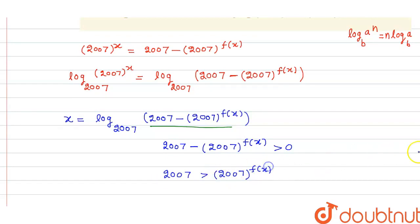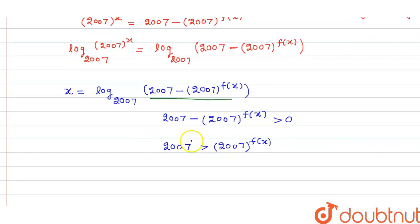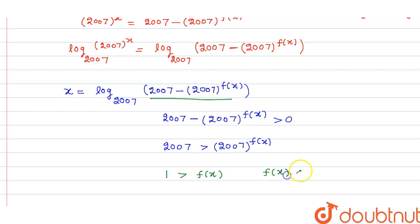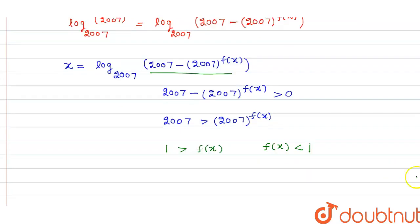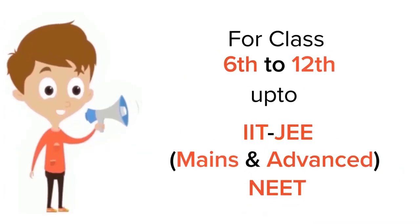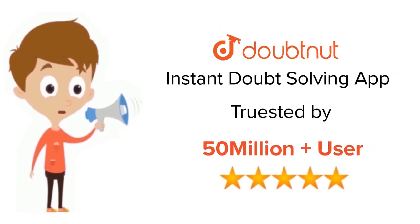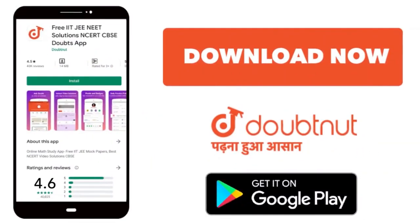Again take log at the base of 2007. This gives us 1 > f(x), meaning f(x) < 1. Therefore the range of f(x) is minus infinity to 1. Thank you, have a good day.